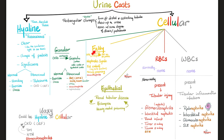Fatty casts: cells are made of lipid bilayer membranes. When cells desquamate, they shed lipid droplets that get incorporated into proteins, forming fatty casts. These are seen in nephrotic syndrome, fat emboli, mercury poisoning, and some cases of glomerulonephritis. Note that glomerulonephritis can produce both red blood cell casts and fatty casts — it's not cut and dry.